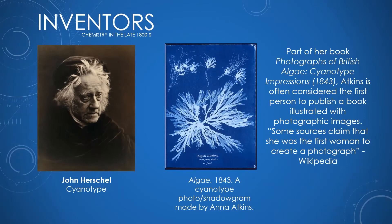John Herschel was an English polymath — mathematician, astronomer, chemist, and inventor among other things — and he's credited for inventing the cyanotype, also known as the blueprint. Instead of an image of his, I have a cyanotype titled Algae, which is a shadowgram made by placing algae directly onto the photosensitive material, flashing a light on it, and taking the impression like a shadow. This was made by Anna Atkins as part of her book Photographs of British Algae: Cyanotype Impressions from 1843. Atkins is often considered the first person to publish a book illustrated with photographic images, and some sources claim she was the first woman to create a photograph.